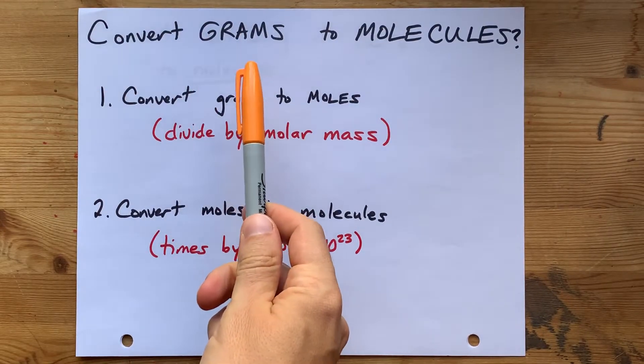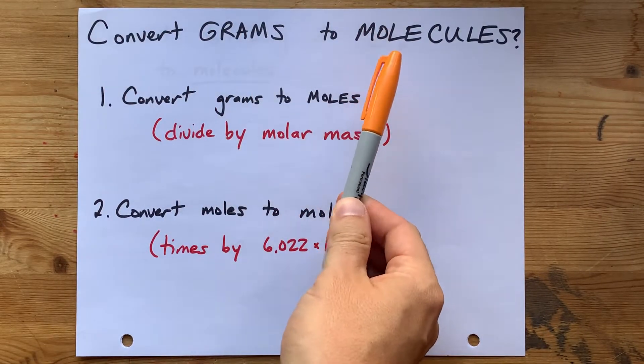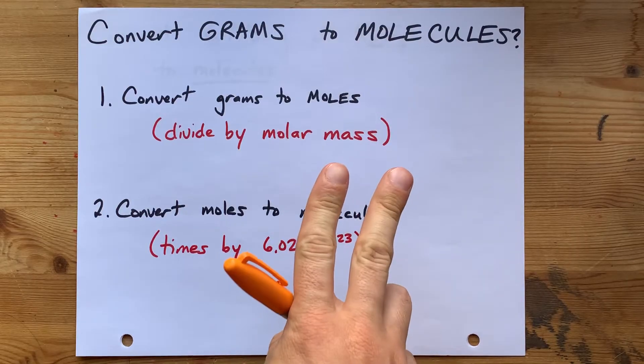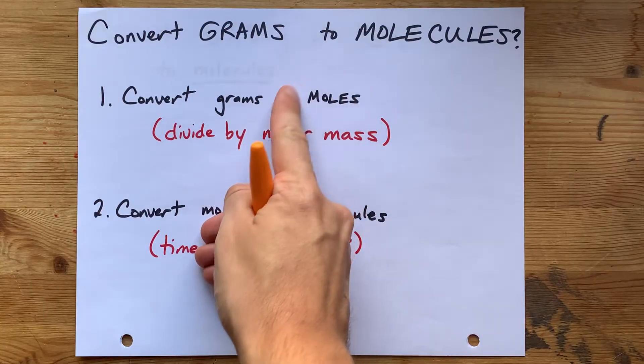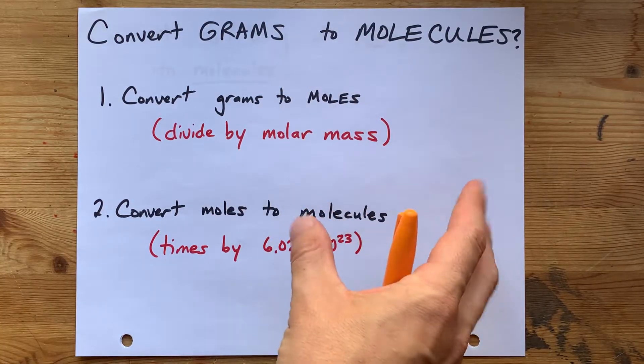Converting from a number of grams to a number of molecules is a simple two-step process. First, you've got to convert grams to moles, which is a measure of the quantity of how many things are there.